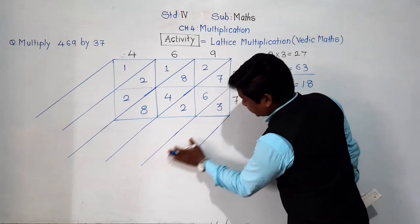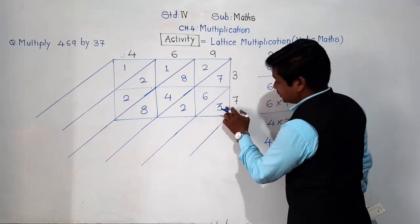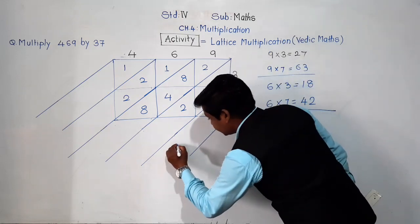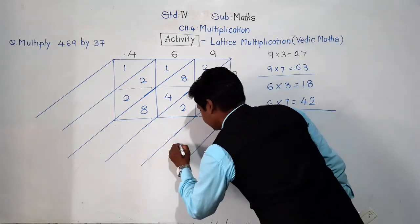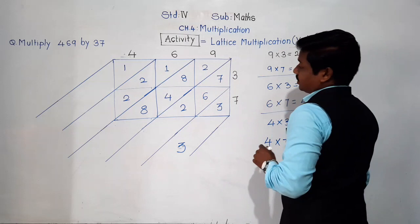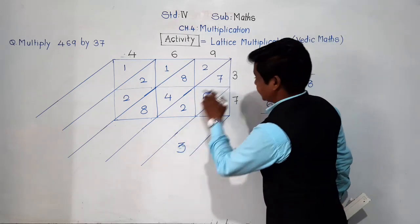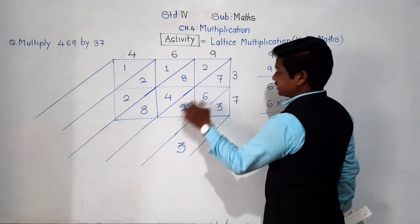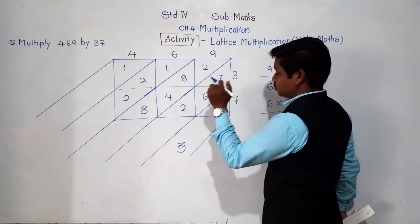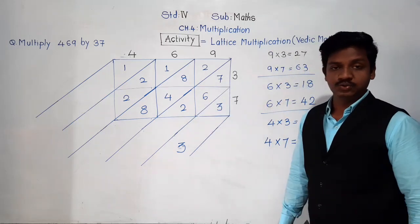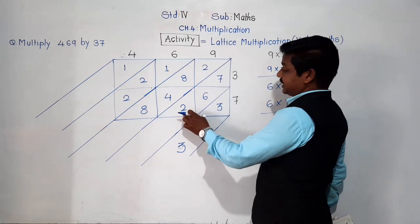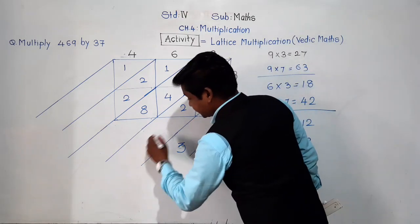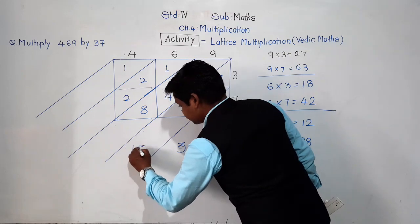In the rightmost last strip, which number is there? There is only 3, so write 3 here. Now the second strip from the right: add 7 + 6 + 2. What is 7 + 6 + 2? That is 15. Whenever we get a two-digit sum, 5 comes down and 1 is carried to the next strip.